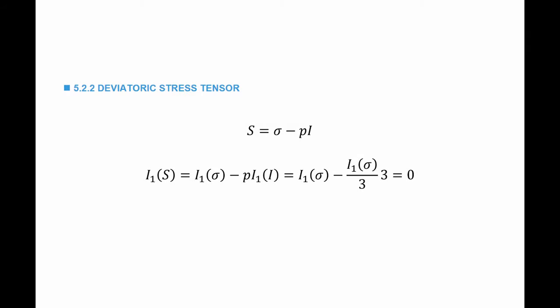S is equal to sigma minus P·I, where P is the hydrostatic stress — the average of the normal stresses. The first invariant of S, or the trace of S, equals the trace of sigma minus P multiplied by the trace of I. The trace of I is 3, and P equals I1(sigma) divided by 3, so 3 cancels 3, giving us trace of S equals 0.